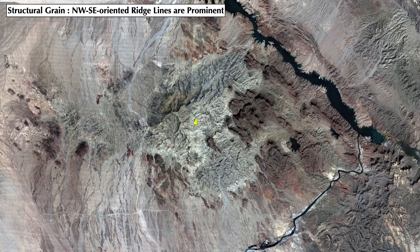I also asked whether you could recognize any structural grain or consistent orientation of lineaments or topographic features. There is a fairly prominent structural grain defined by these dark brown ridge lines, which are all striking northwest-southeast. There are several prominent ones, and some are even defined by different rock types suggested by their colors — white against brown — still showing these northwest-southeast orientations of those contacts.